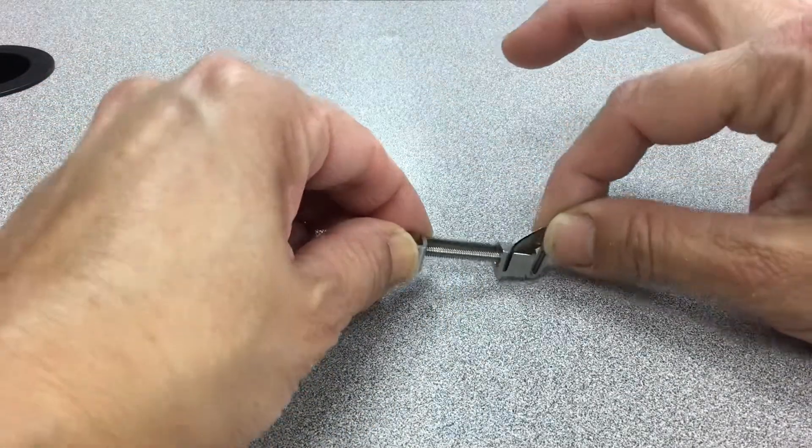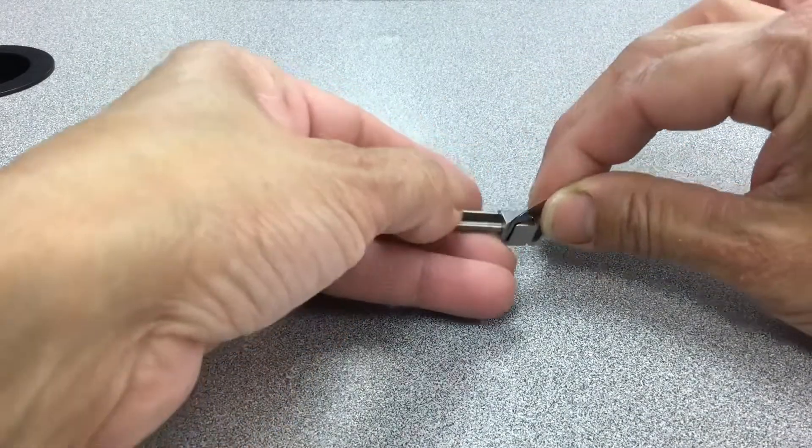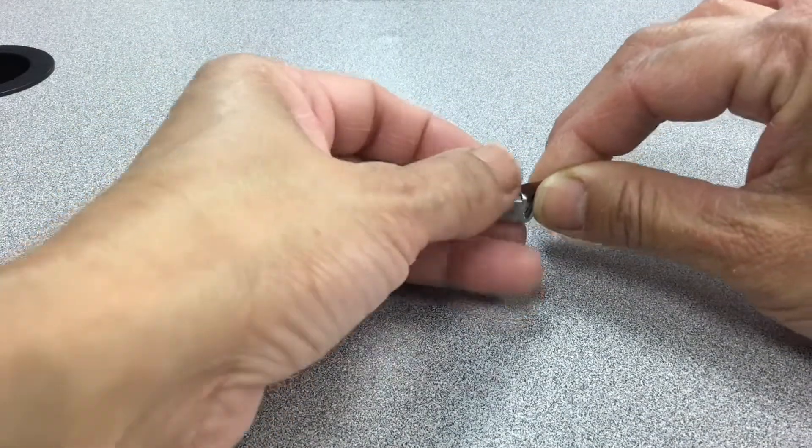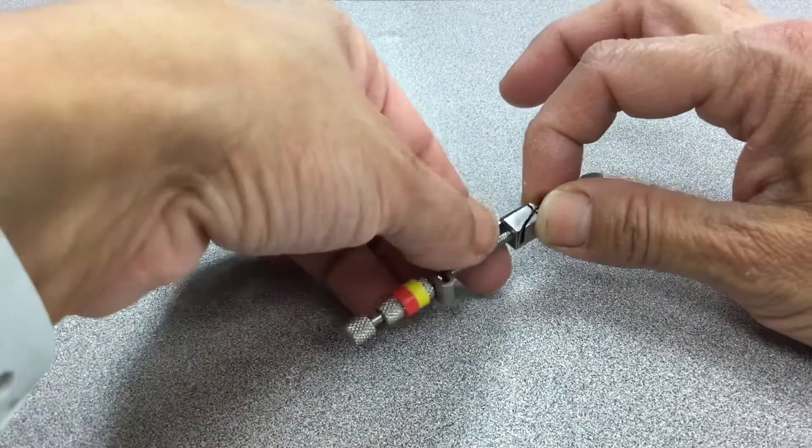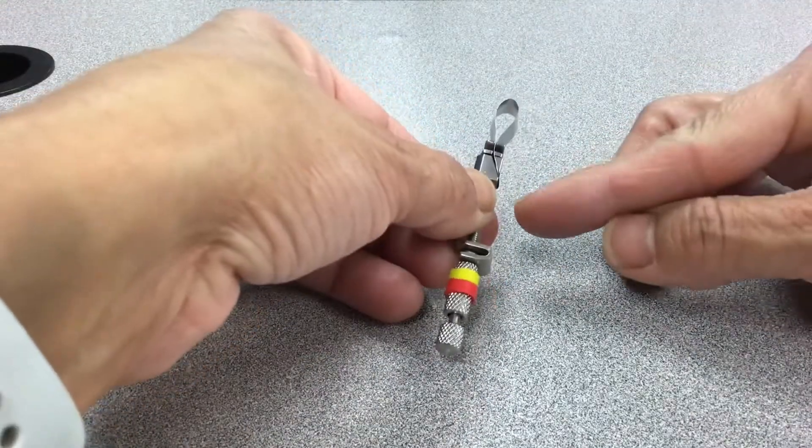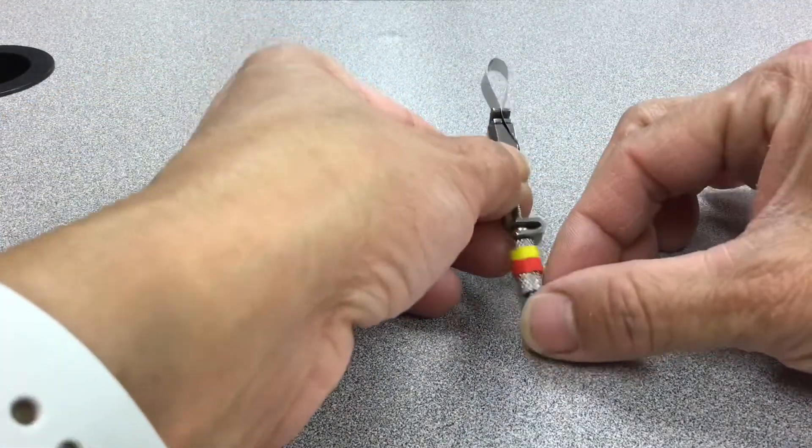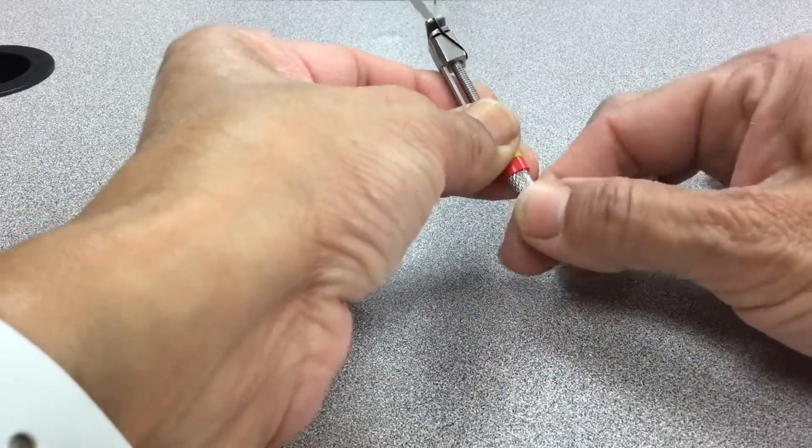You place this in here, and then you stick it out like this. Then what you're going to do, there's a little area here, you close it, tighten it up.